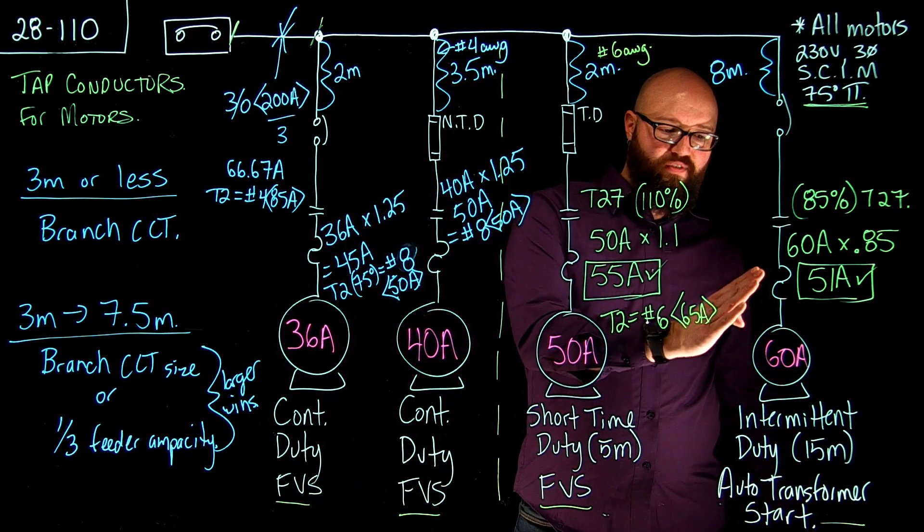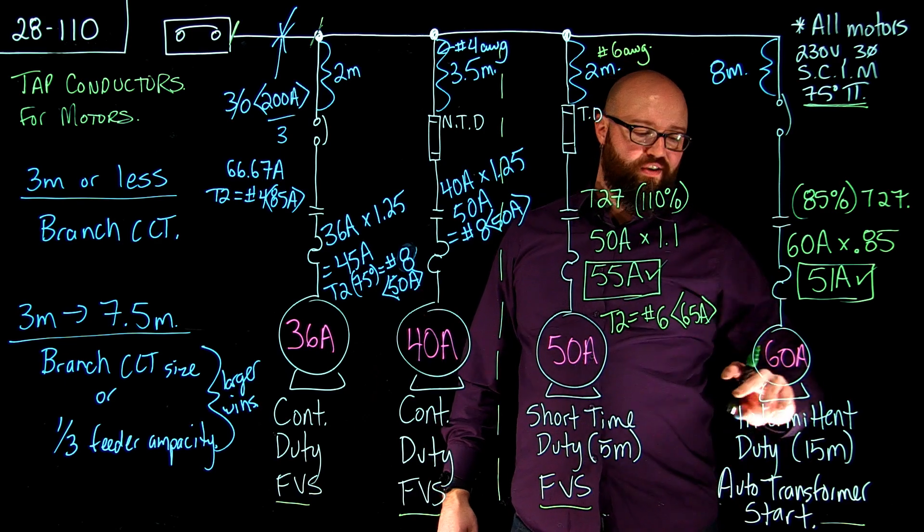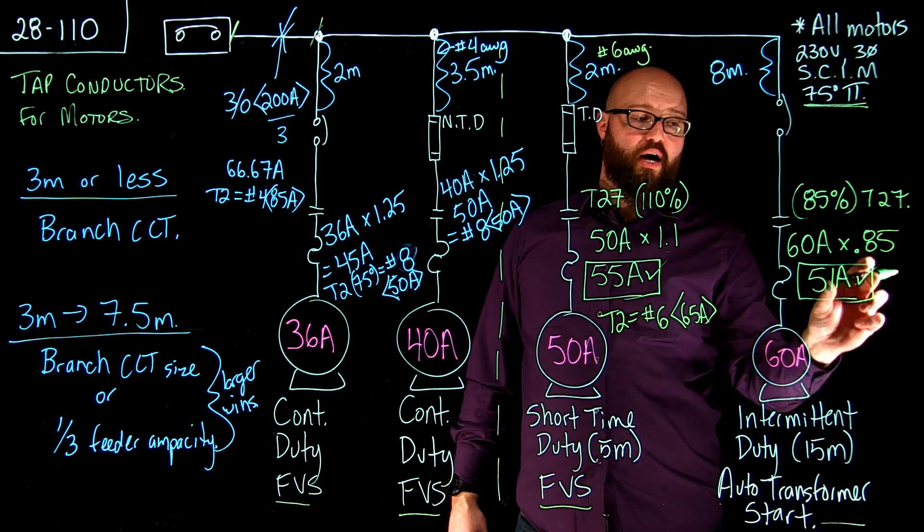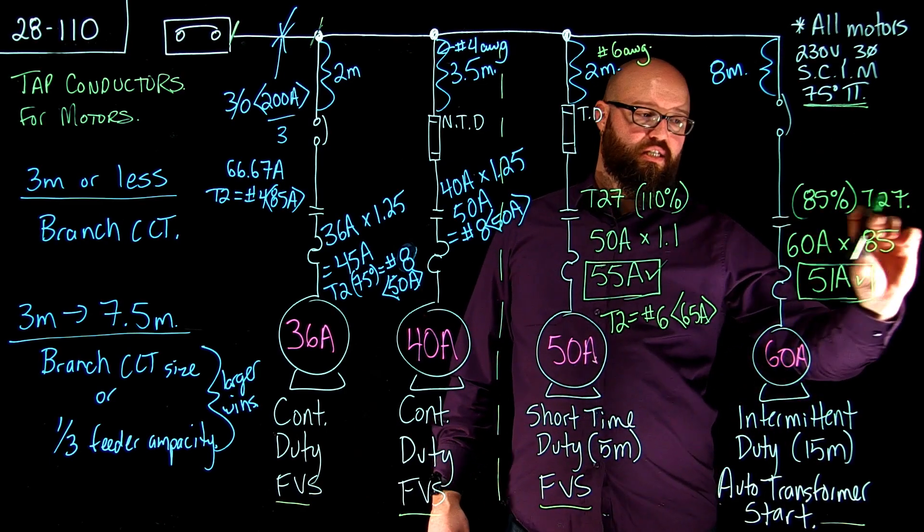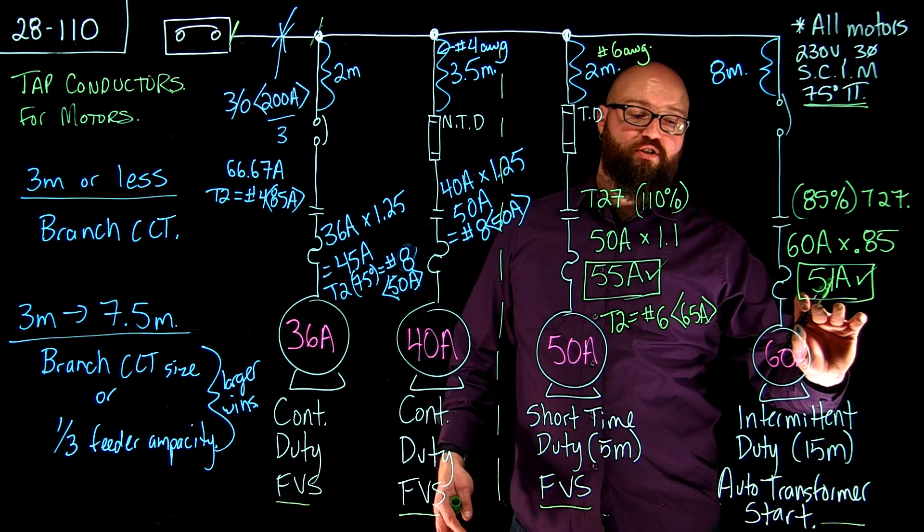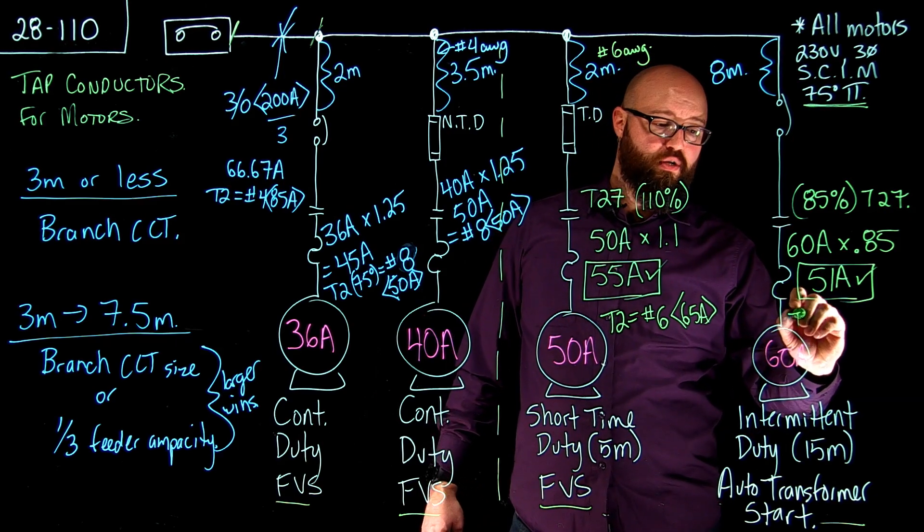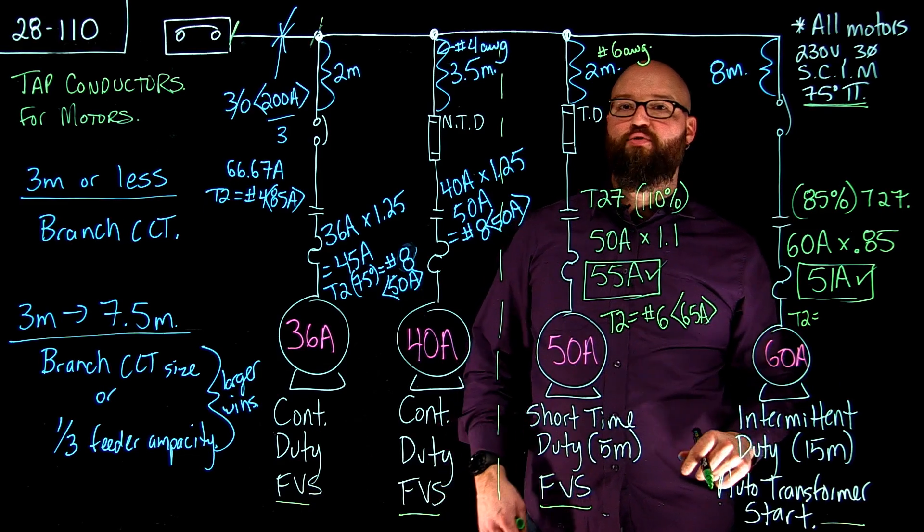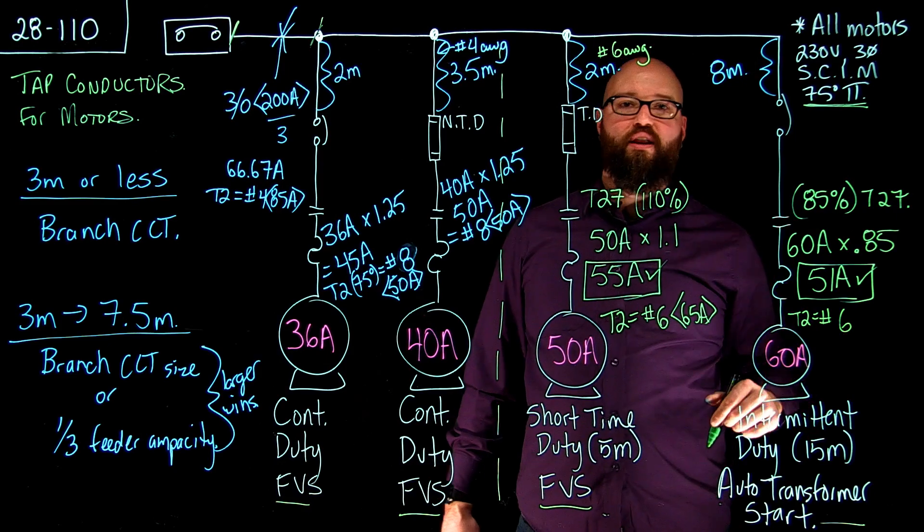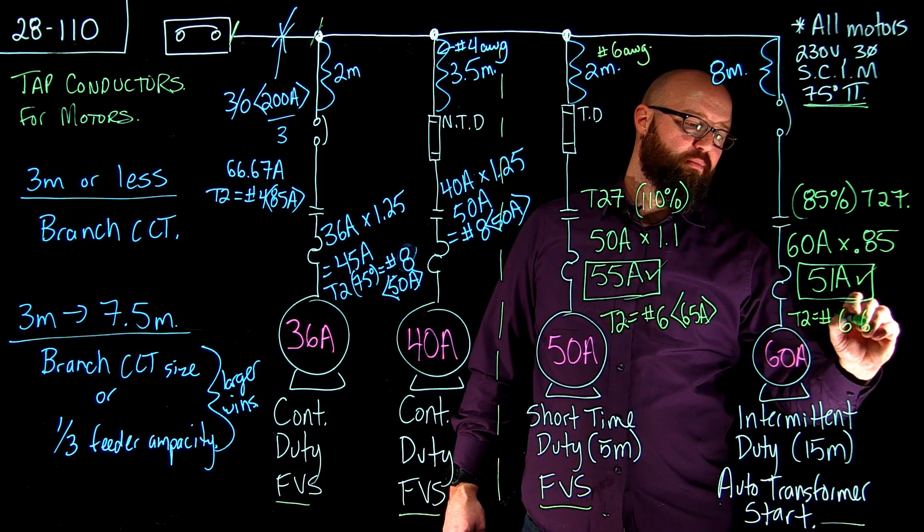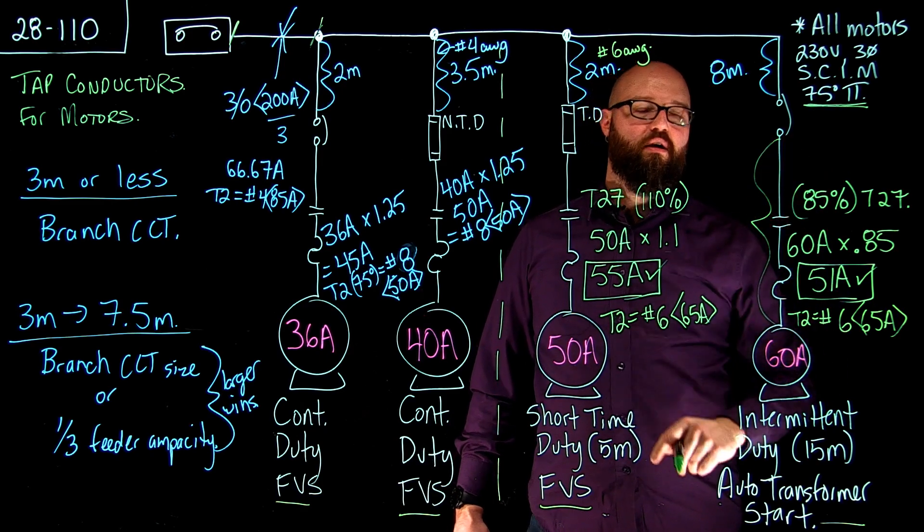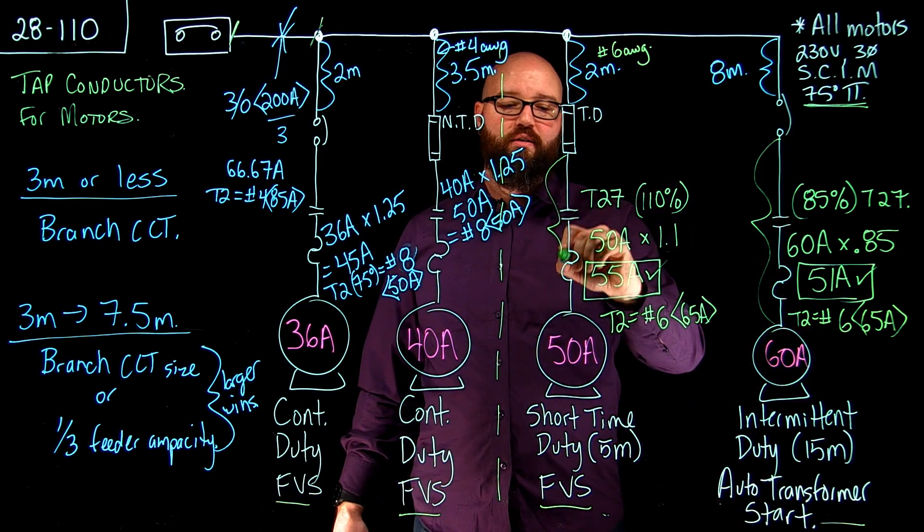Then we get to our last value here we have our 60 amp intermittent duty 15 minutes which gave us a multiplier from table 27 of 85%. 60 amps times 85% gave us 51 amp minimum capacity for our branch circuit. So we can go to table 2 and size our branch circuit which was or sorry which should be again a number 6 because we're just over that number 8 50 amps. So we're going to go with a number 6 65 amps. Again that's my branch circuit.